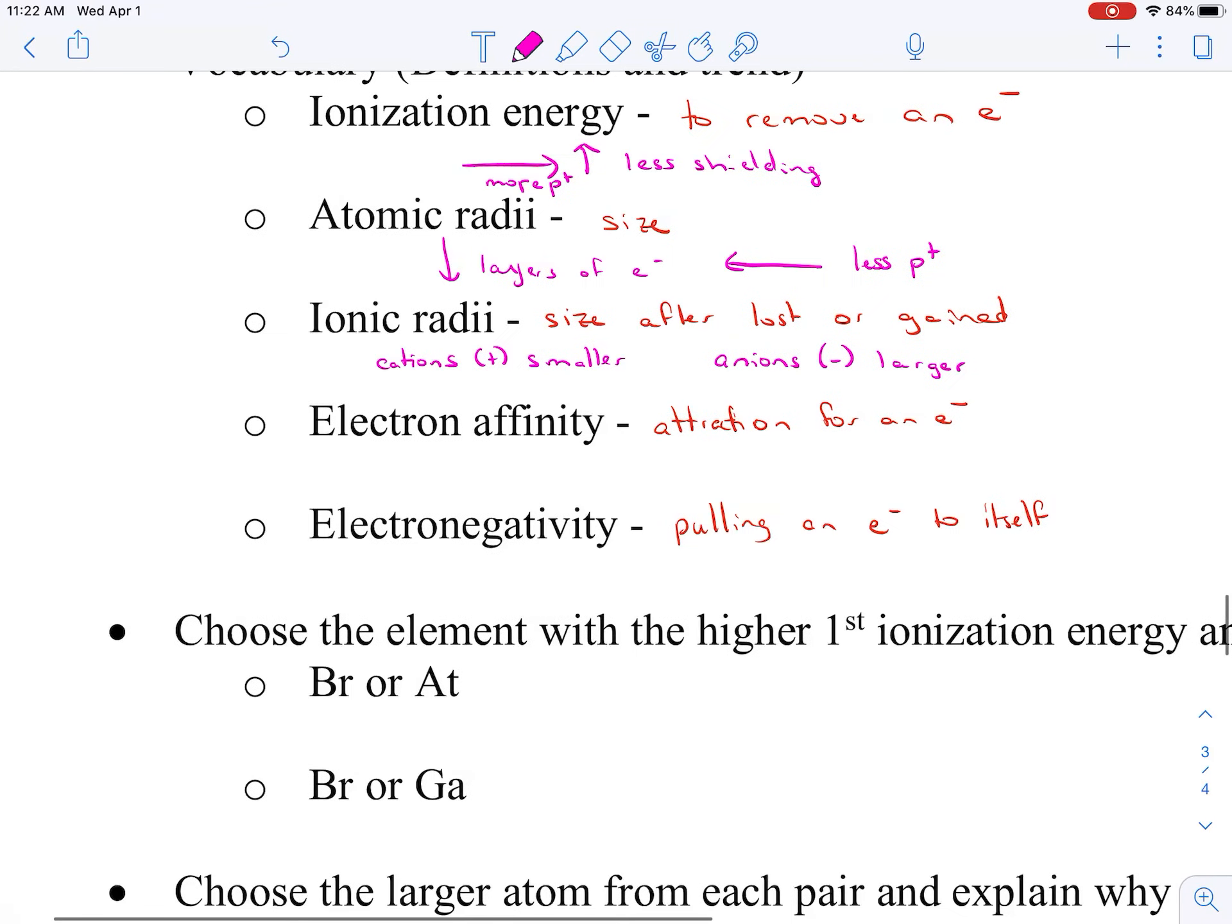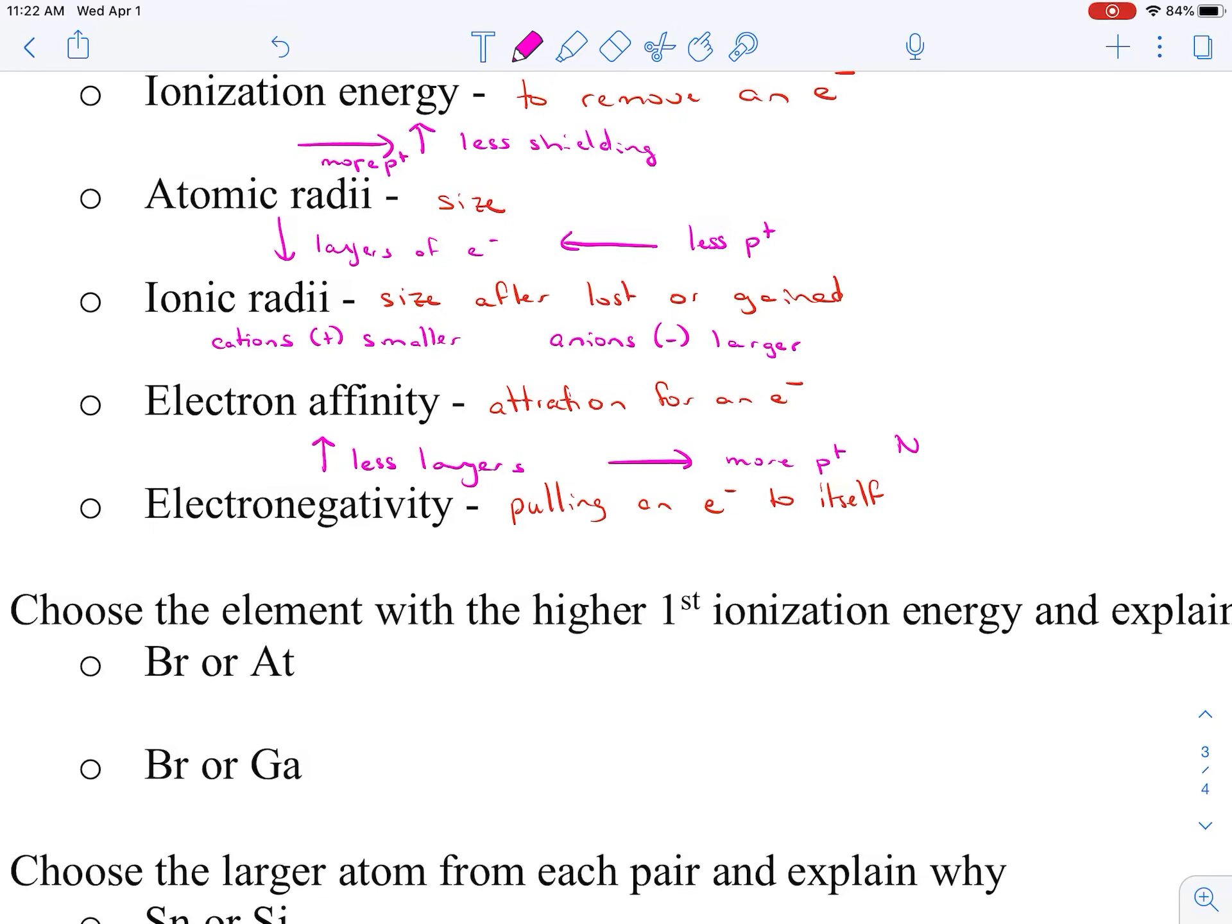Electron affinity increases as we go up, and that's our less layers, and it also increases to the right, and that's because we have more protons. And the one we leave out of this is our noble gases. Noble gases would actually go on the other side, noble gases are exempt. They would actually be on the other side of group one because of that full valence shell. Electronegativity, remember this is the same one as the others, also the same reasons, and fluorine is our most electronegative element.